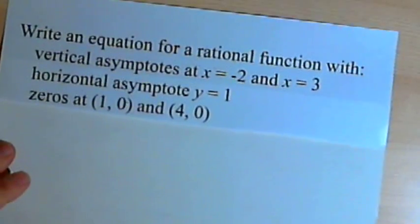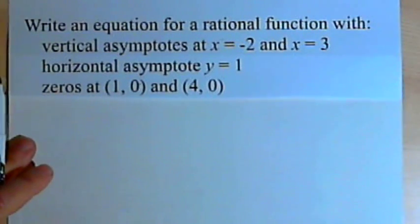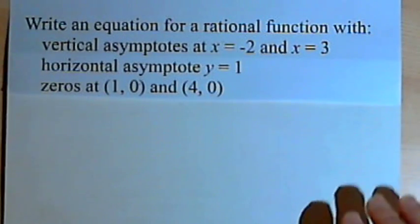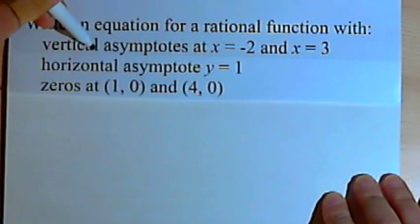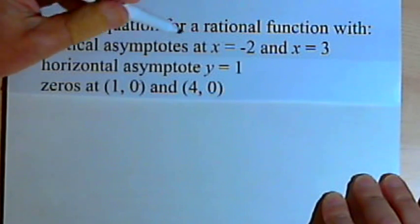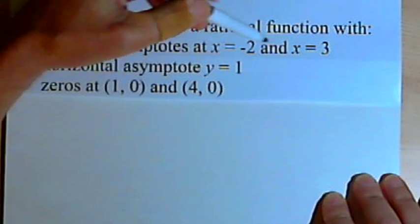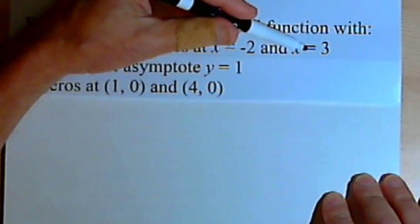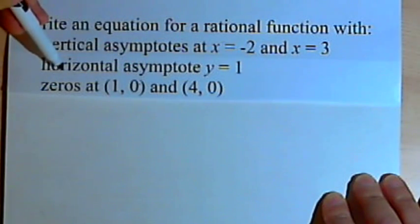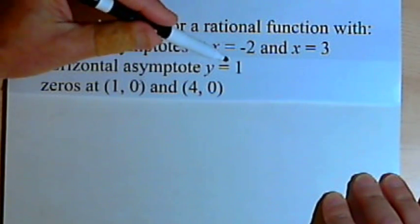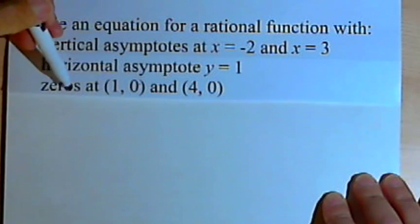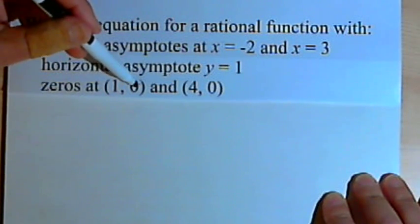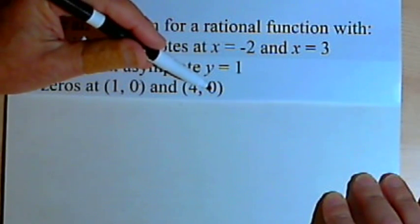Here's the first problem. Write an equation for a rational function with vertical asymptotes at x equals negative 2 and x equals 3, a horizontal asymptote at y equals 1, and zeros at (1, 0) and (4, 0).